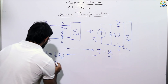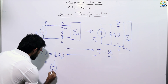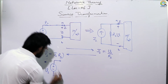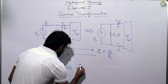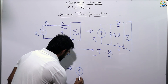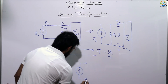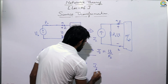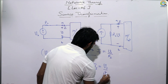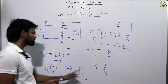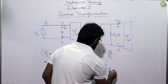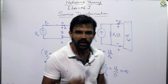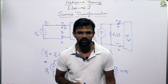Source transformation cannot be used for ideal sources. If you have an ideal voltage source VS with no series resistance — RS = 0 — then when you convert it, IS = VS / RS = VS / 0, which equals infinite. That current value would be infinite, which is an undefined quantity. Therefore, source transformation is not applicable to ideal sources.